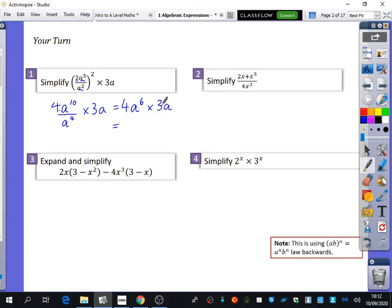Now, the a to the 10 over a to the 4 simplifies directly to a to the power of 6, and the 4 is still there. And then we're multiplying by 3a. Now, if you have an a by itself, what power is secretly written there? 1. There's actually a 1. So the new power of a is going to be a to the power of 7, and you've got 4 times 3, which is 12. So your answer is 12a to the 7.